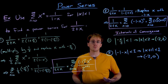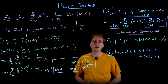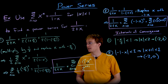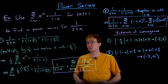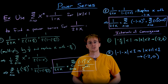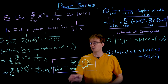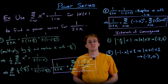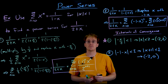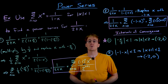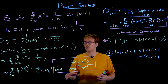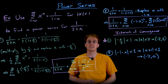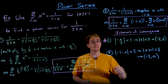So which representation is better? The first representation has a larger interval of convergence, (−2, 2), compared to the second's (−2, 0). For that reason, the first representation is more useful. The key takeaway is that power series representations for a function are not necessarily unique, especially when centered at different points, and different representations can have different intervals of convergence.